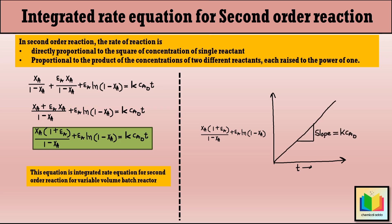That's all for today's video. I hope you found this explanation of the integrated rate equation for a second order reaction in a variable volume batch reactor helpful. If you haven't watched the previous videos on the integrated rate equations for zero order and first order reactions in a variable volume batch reactor, make sure to check them out — you will find the link in the description box below.